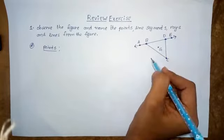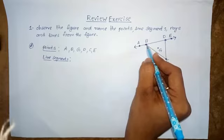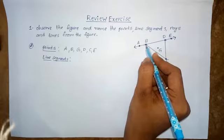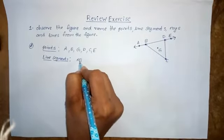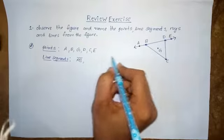Next, identify the line segments. A line segment is a straight path containing two end points. Observe this figure — AB is one line segment because AB is a straight path having two end points.